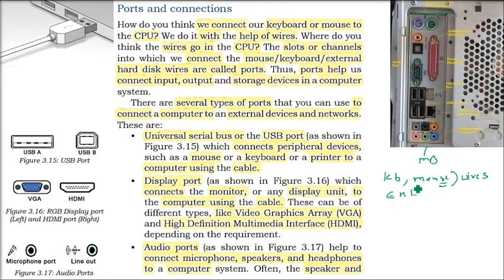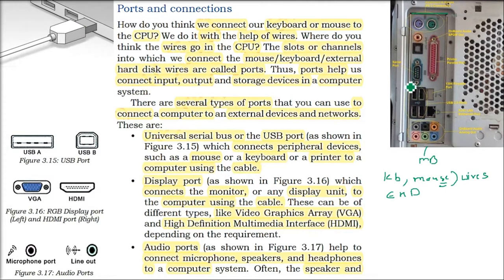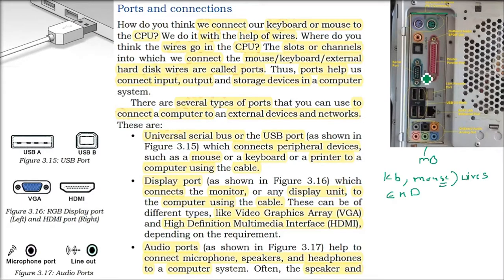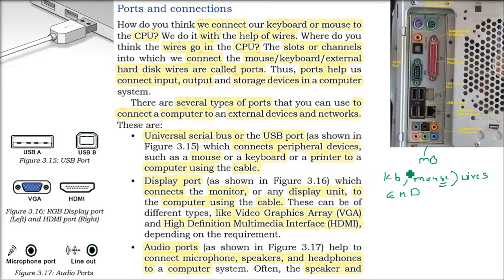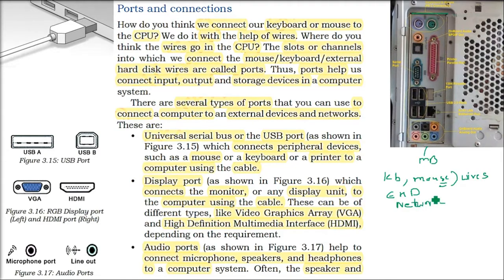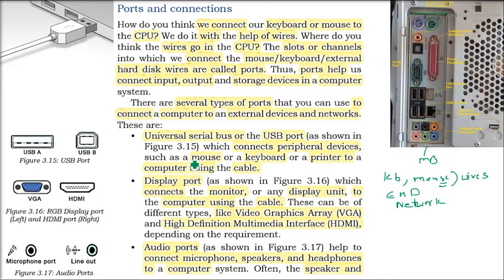For example, if you have an external hard drive, you have to put it somewhere — you have to make the connection, and that connection is through ports. We connect different peripheral devices to the CPU through wires or wirelessly today. These slots or channels connect devices like mouse, keyboard, and external hard drives to your system, and also to the network.